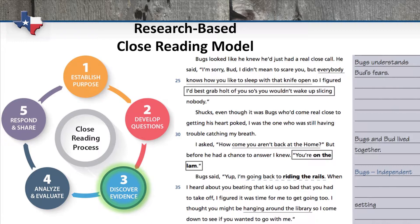Note that in this example, as per the objective in step one, we have underlined the parts of the passage that might help us understand the setting and the relationship of the characters.